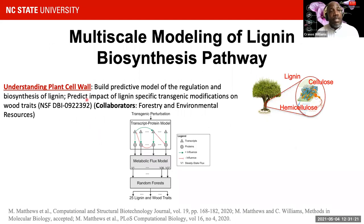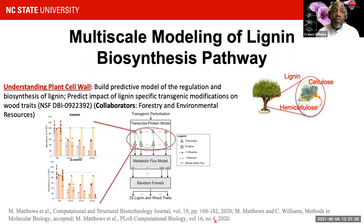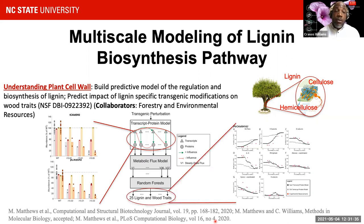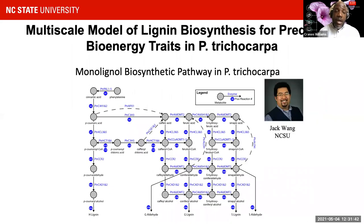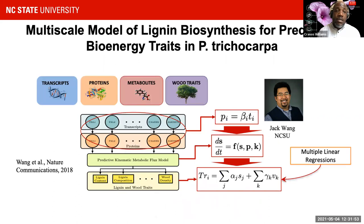A third project looked at the plant cell wall — building a predictive model of lignin biosynthesis and understanding how changes in specific monolignol genes influenced wood traits. This work started in collaboration with Jack Wang, Vincent Chang, and Ron Sederoff in the Biotechnology Forestry Department at NC State. We wanted to take the known model of lignin biosynthesis and convert it into a multi-scale model capturing aspects of transcription, protein generation, and production of metabolites, leading all the way to wood traits.